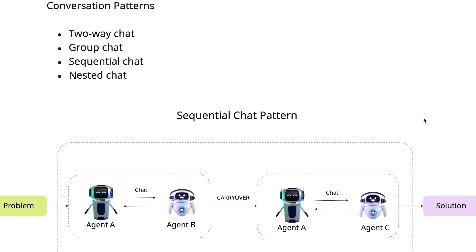Hello everyone. In this session we are briefly going to discuss about the different conversational patterns or agentic workflows offered by AutoGen. I have listed down four different most common conversational patterns which are the two-way chat, the group chat, the sequential chat, as well as the nested chat.